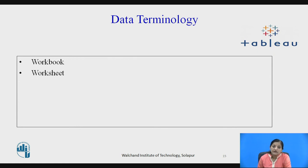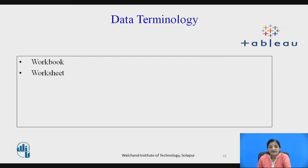Workbook is a file with extension .twb in the Tableau repository. It consists of multiple worksheets, possibly including dashboards as well as stories. Worksheet is used to build the data views on the data in the data source, and the formatting of the worksheets can be controlled by using the format pane.